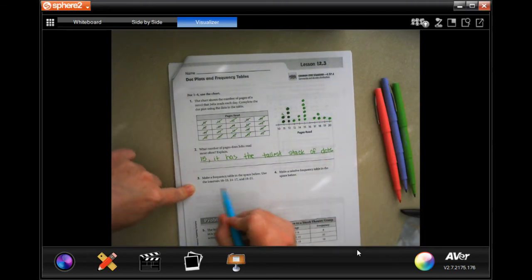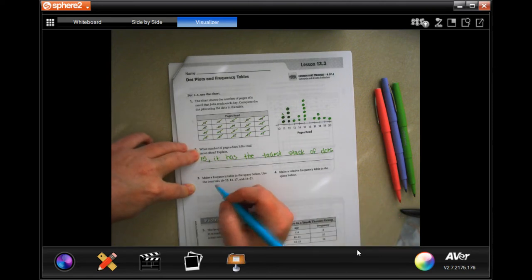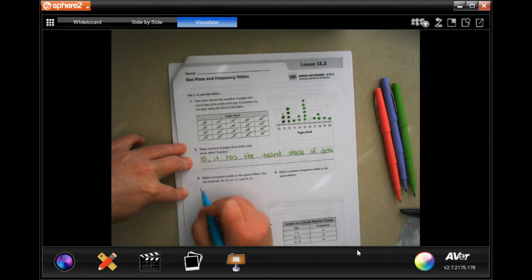Okay. Make a frequency table in the space below. Use the intervals of 10 to 13, 14 to 17, and 18 to 21. Okay, so it wants us to use the information up here, but we're going to make a table.